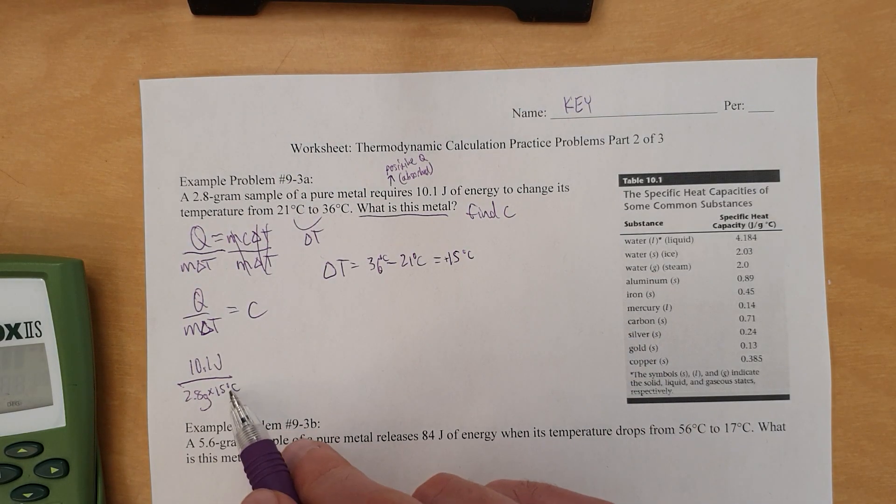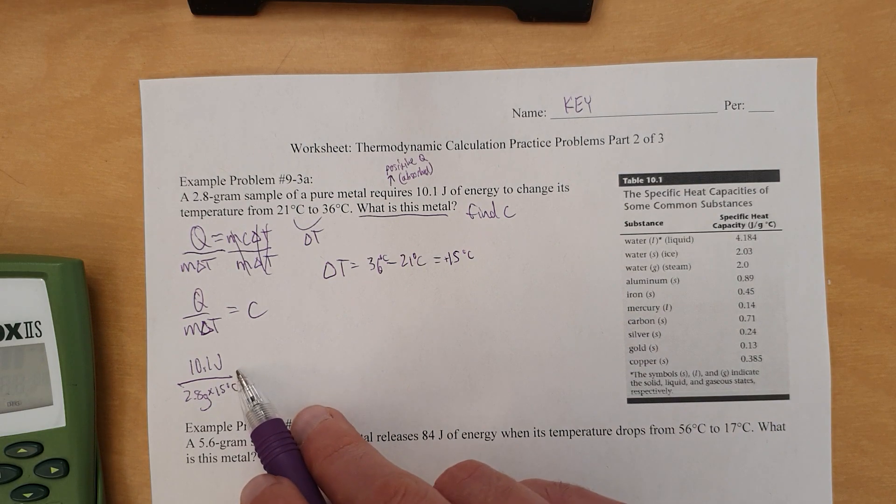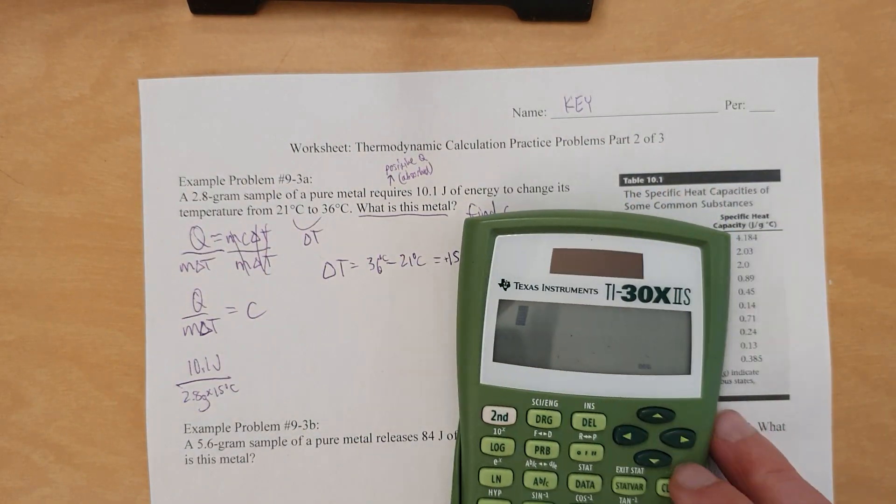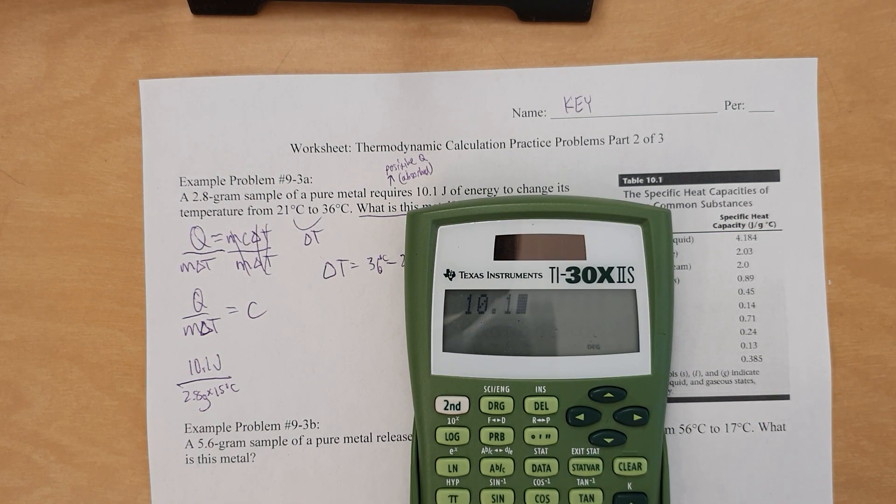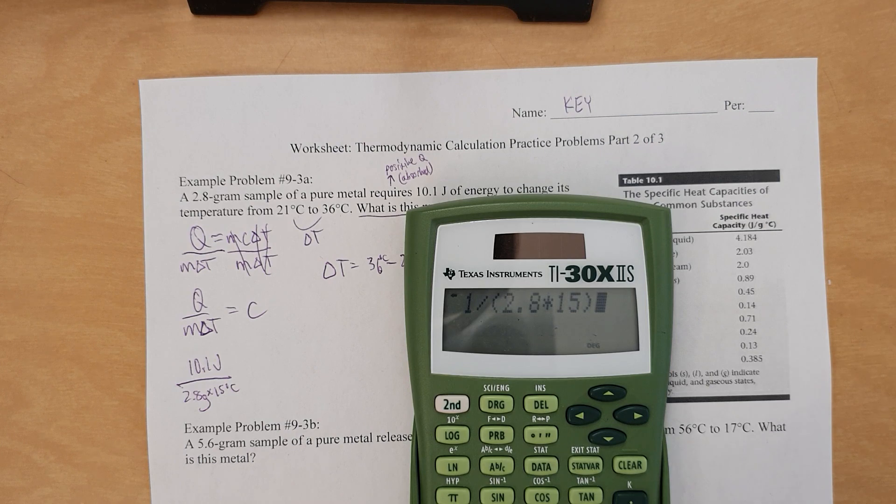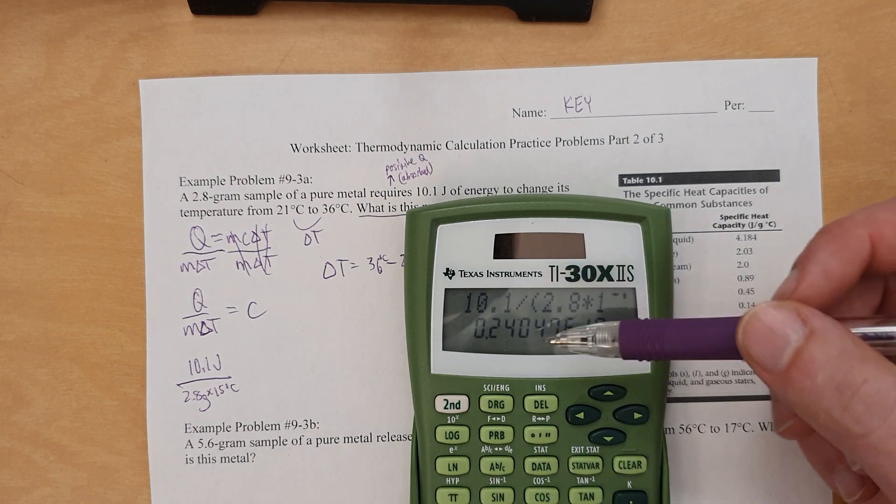So joule per gram degree Celsius actually is the units of specific heat capacity anyway. So yay, our units cancel out correctly. And now we do the actual math. 10.1 divided by 2.8 times 15, close parentheses. You need those parentheses, by the way. Without those, you're going to get a wrong answer.